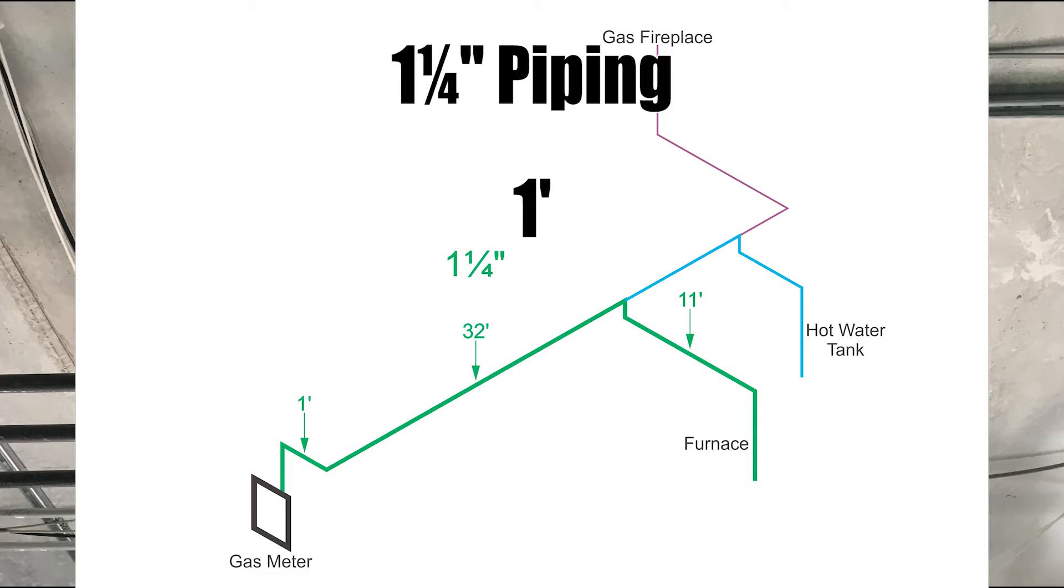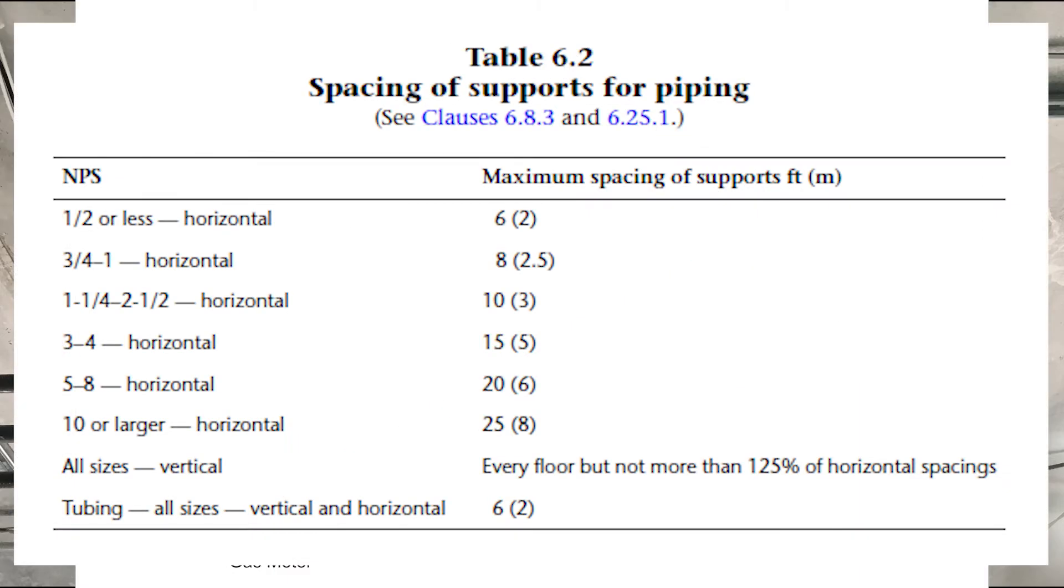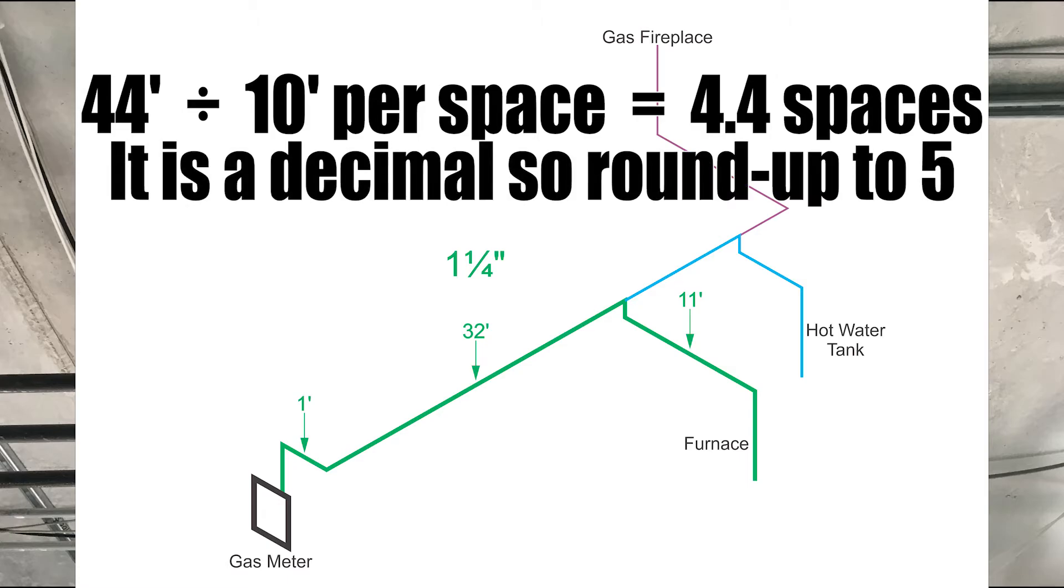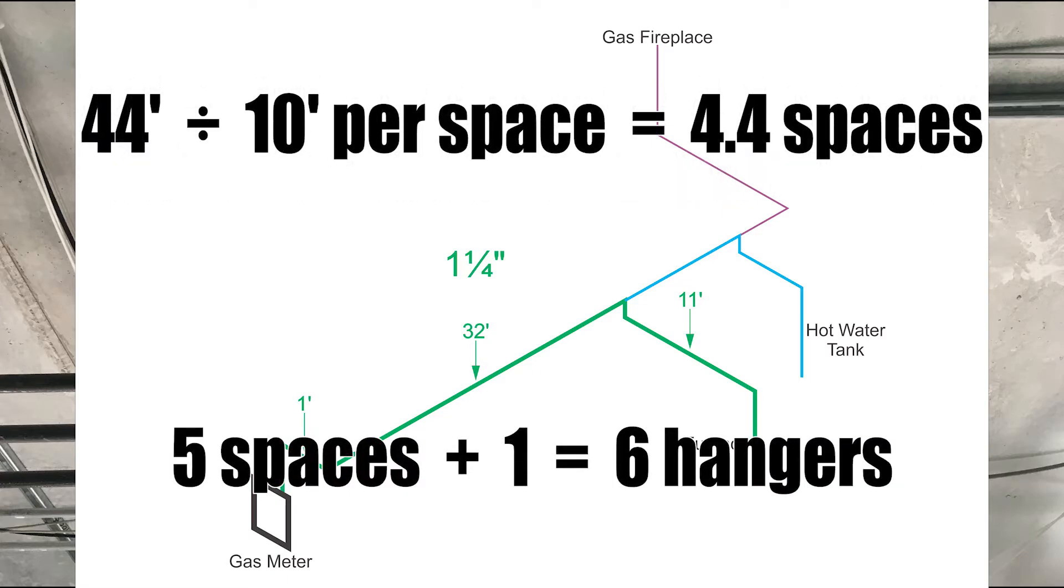I have one foot, plus 32 feet, so that's 33 feet, plus 11 more feet going to the furnace, which brings us to 44 feet. According to table 6-2, the maximum spacing for one and a quarter inch black iron pipe is 10 feet. So 44 feet divided by 10 foot spacing equals 4.4 spaces. Using the round up rule brings us to five, plus one equals six hangers.